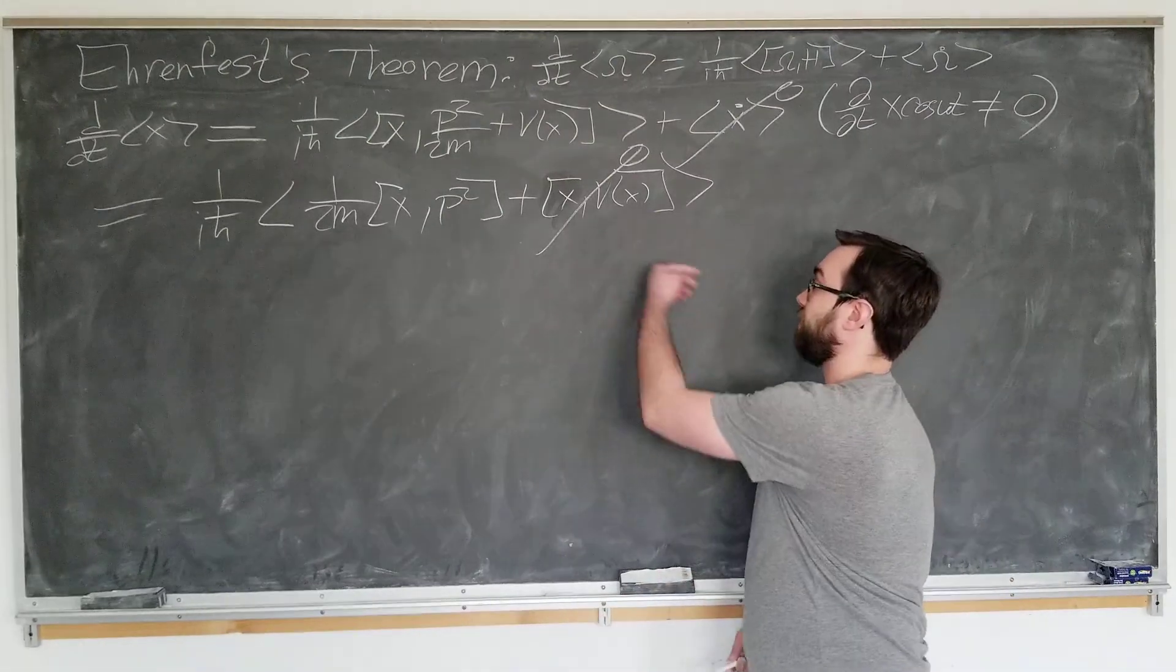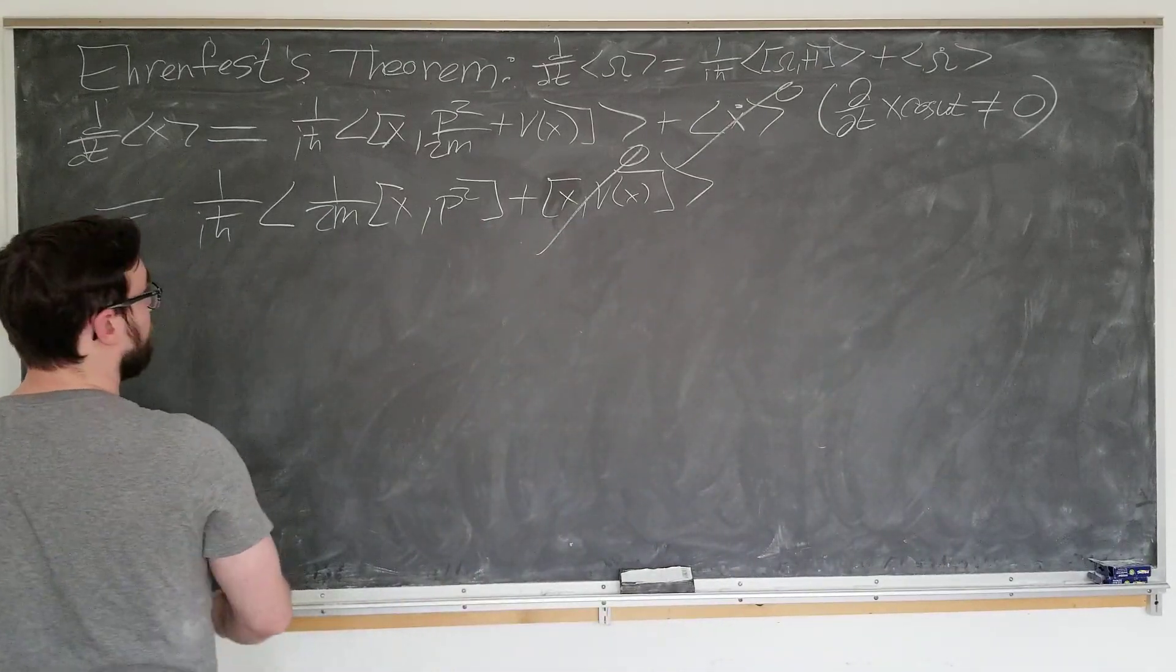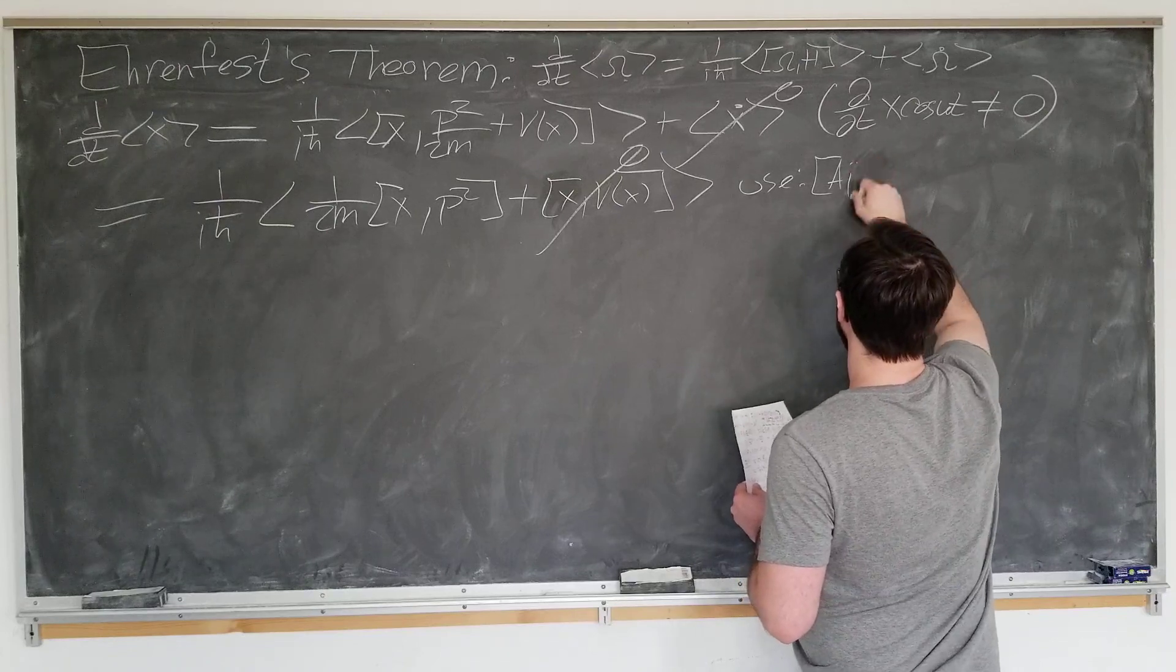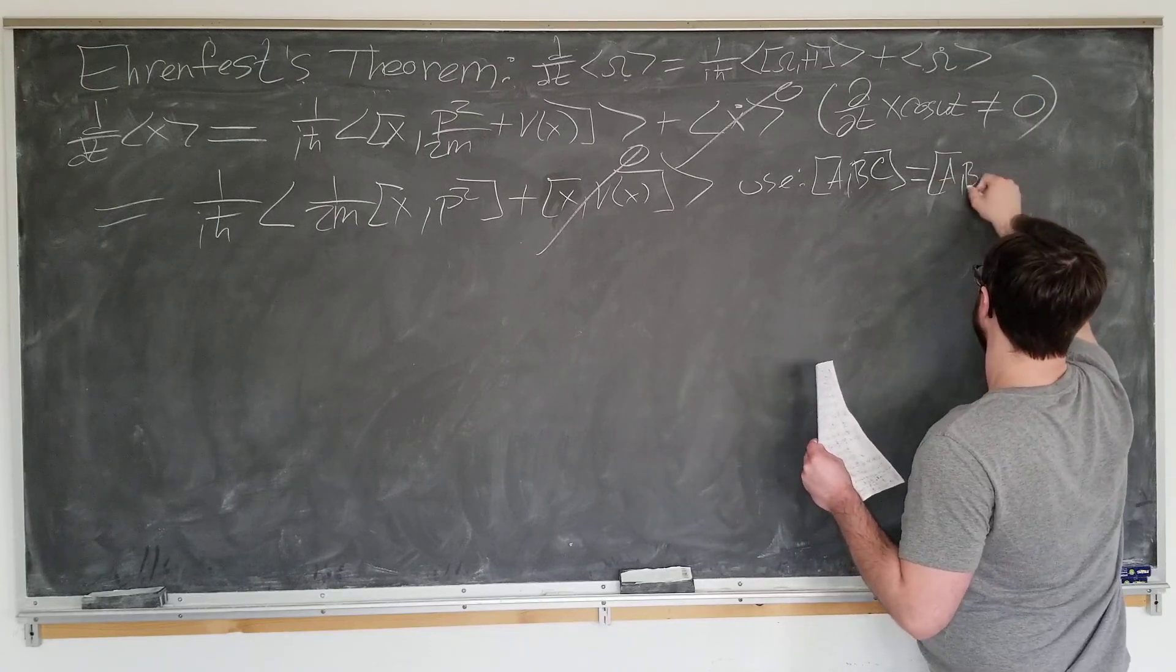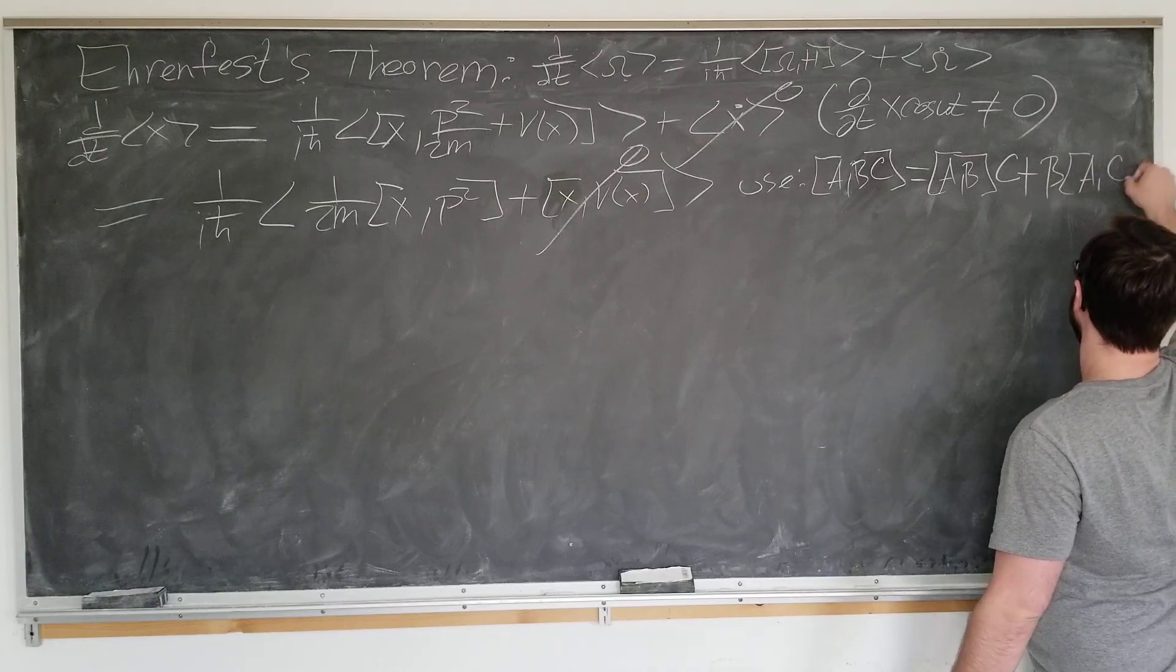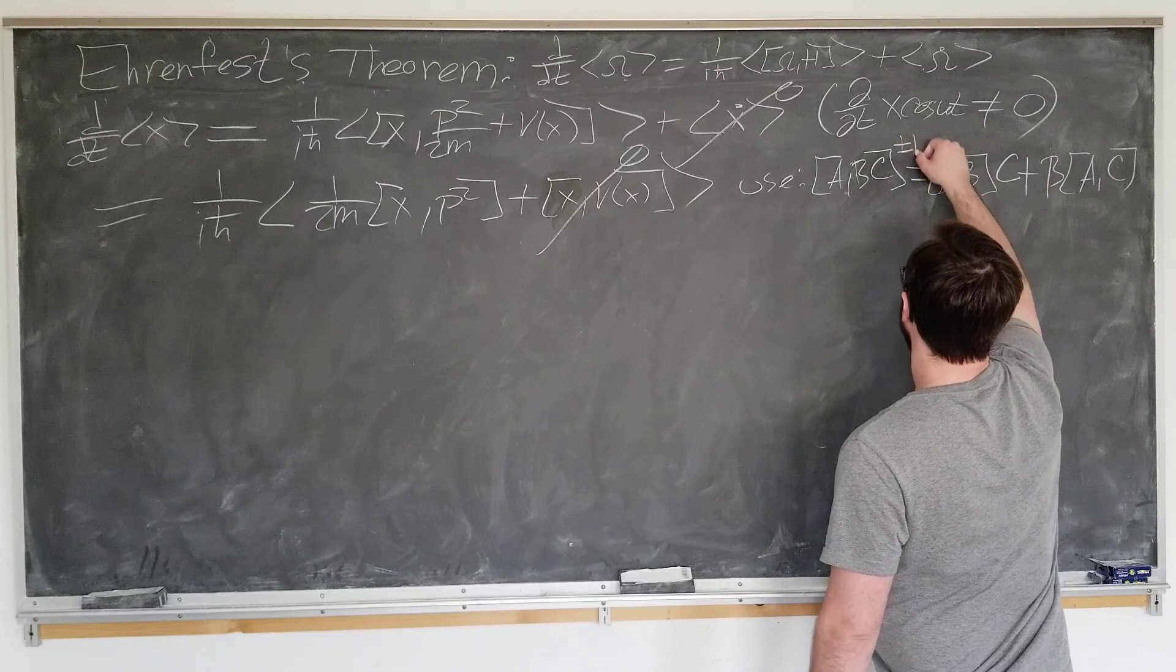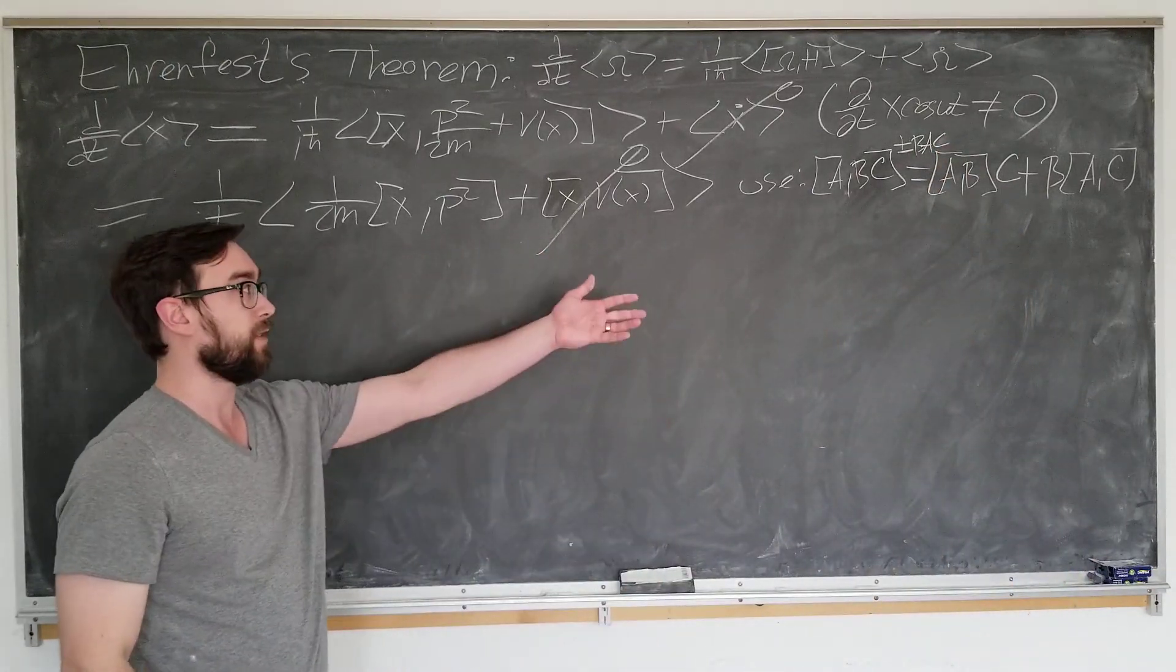To evaluate x with p squared, we have to use a commutator identity. Going to need a with b c is equal to a with b times c plus b times a with c. I can just never remember this. If you have a way to remember this, feel free to tell me. I'm not going to derive this here, but if you wanted to, you could expand a b c minus c a b on both sides, and then factor out from the right and left respectively.